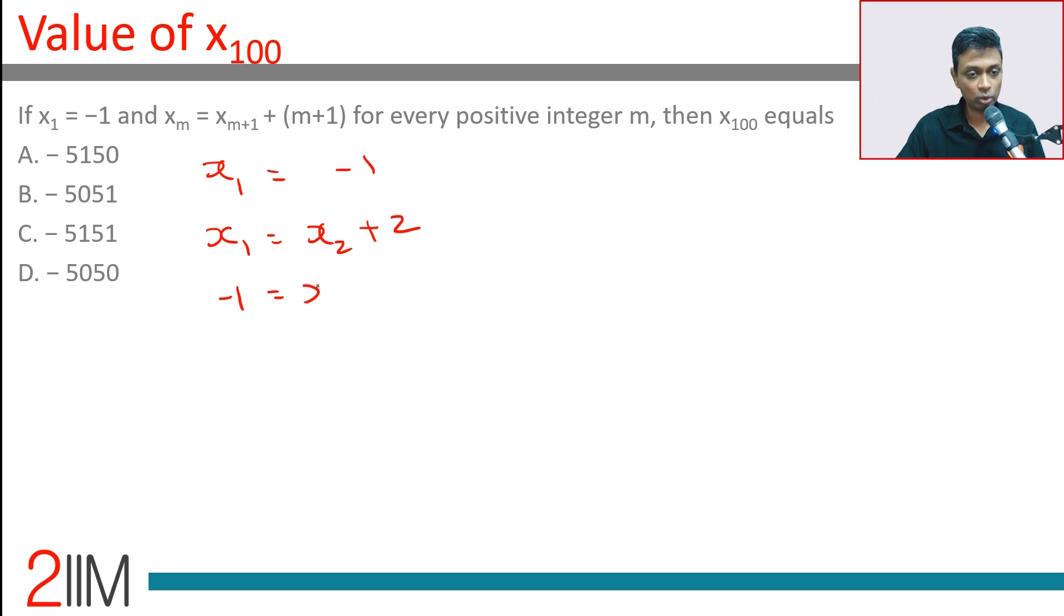So -1 = x2 + 2, which means x2 = -3. Now x2 = x3 + 3, so -3 = x3 + 3.